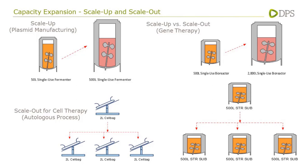When looking at autologous cell therapy — using CAR-T as an example — this is personalized medicine: the batch size never changes, it is one patient per batch. Commercial scale facilities therefore need to manufacture multiple patient batches in parallel to meet throughput demand of a given number of patients per year. In this case we are scaling out, and multiple wave bioreactor systems operate in parallel in the same manufacturing area.